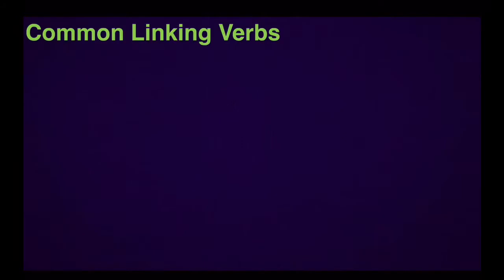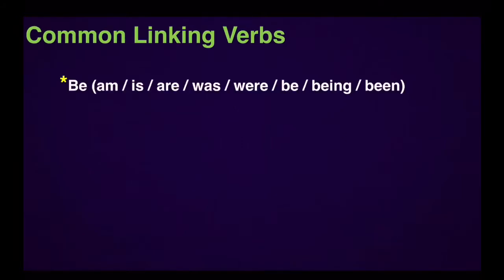Some common linking verbs in English — first of all — are the forms of be. This is the most common linking verb in English. We call it the be verb, but really it is all of these forms put together: am, is, or are in the present tense; was or were in the past tense; the base form be; the present participle being; or the past participle been. All of these are the be verb and this is the most common linking verb in English.